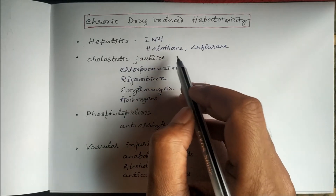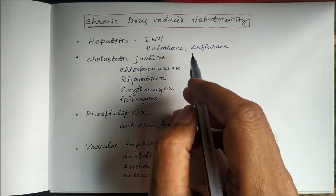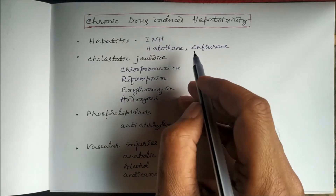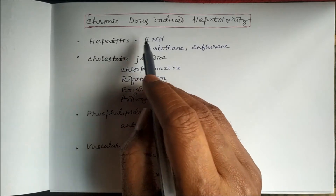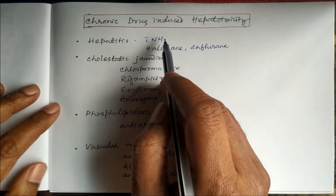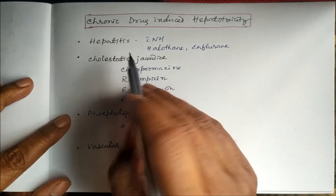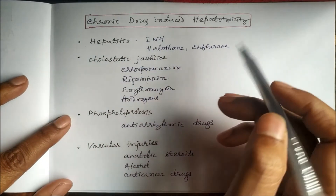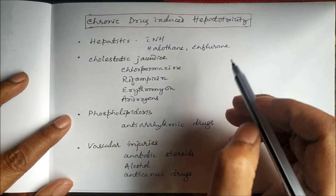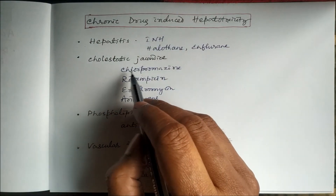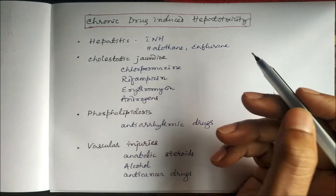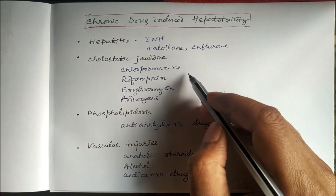Drugs can also produce chronic hepatotoxicity. Drugs which can produce acute hepatotoxicity like isoniazid, halothane, and enflurane can also cause hepatitis chronically.